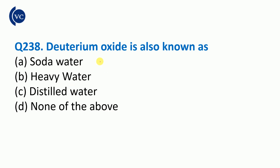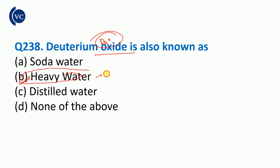Next question: deuterium oxide, known as D2O or heavy water. Deuterium oxide is used as a moderator in nuclear power plants to slow down the reaction speed.